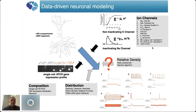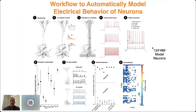Then the challenge is how do you build a model neuron? Taking the three-dimensional morphologies, using information from gene expression about which ion channels are present in those cells, using the ion channel models, and then essentially applying a multi-objective optimization process — a machine learning process to try out different configurations of the ion channels distributed across that morphology to recreate the electrical features of each electrical type of neuron. Using this approach, you can establish an automated workflow to build data-driven model neurons.